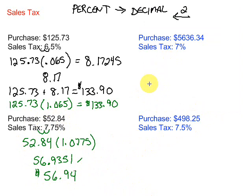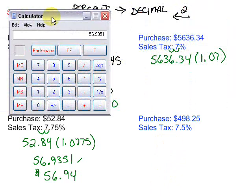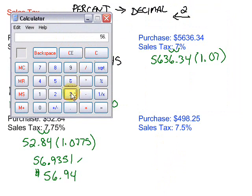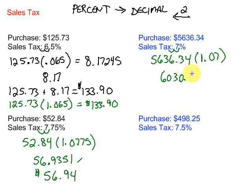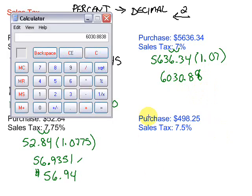Let's take a look at another one here. We've got a larger purchase this time, $5,636.34. There's a sales tax of 7%. Change that to a decimal, two spots, one, two. So we're going to multiply by, remember, we'll take that 100%. So 1.07. Multiply those two. So we have 5636.34 times 1.07. Gives us $6,030.88.